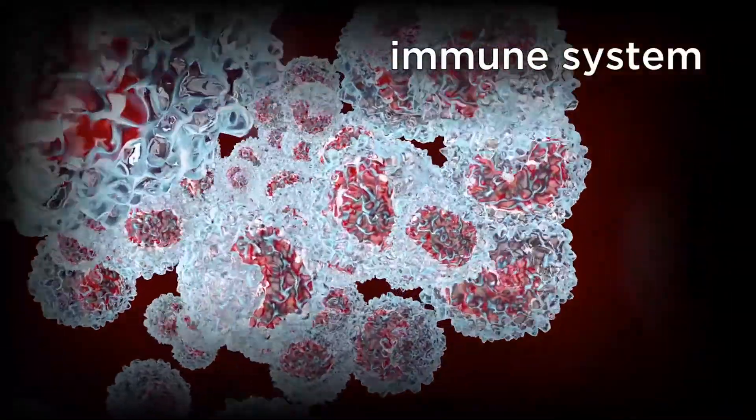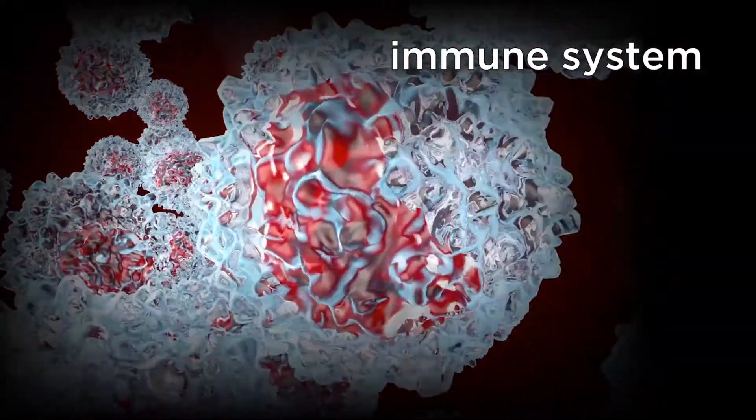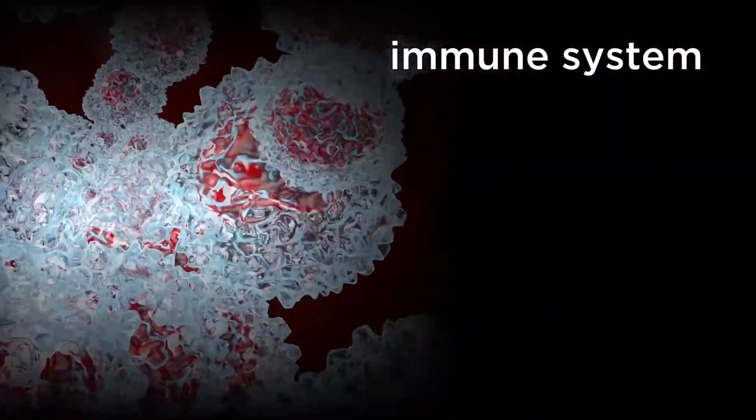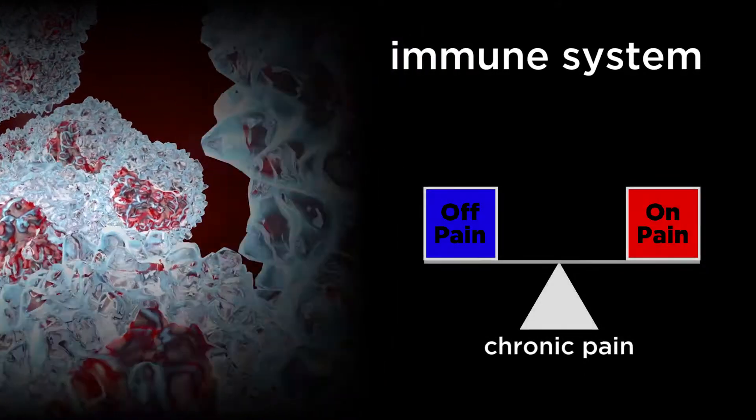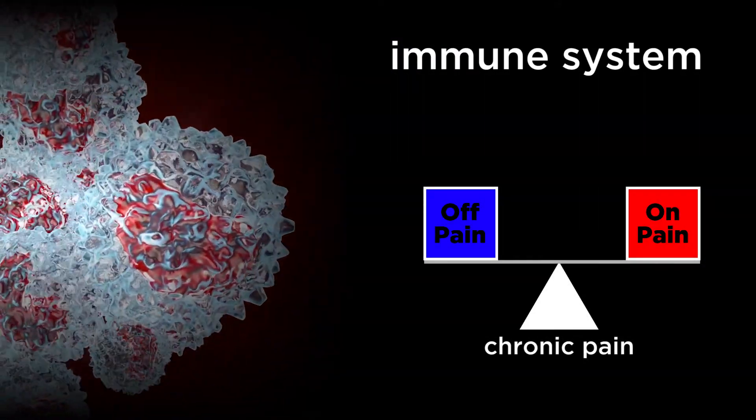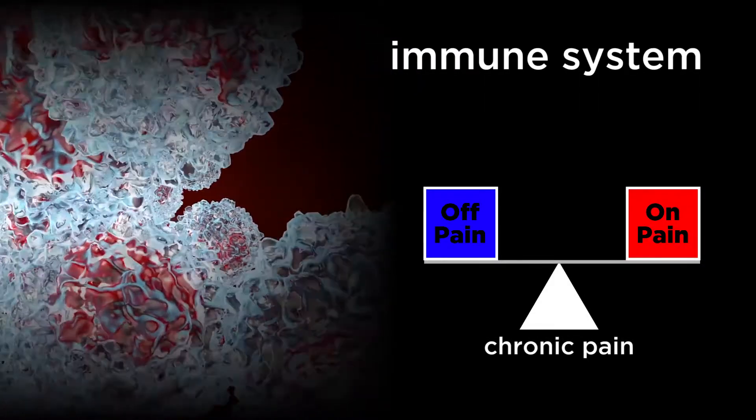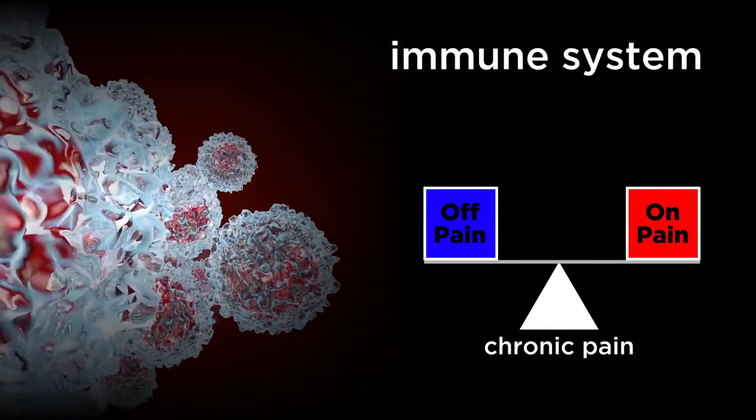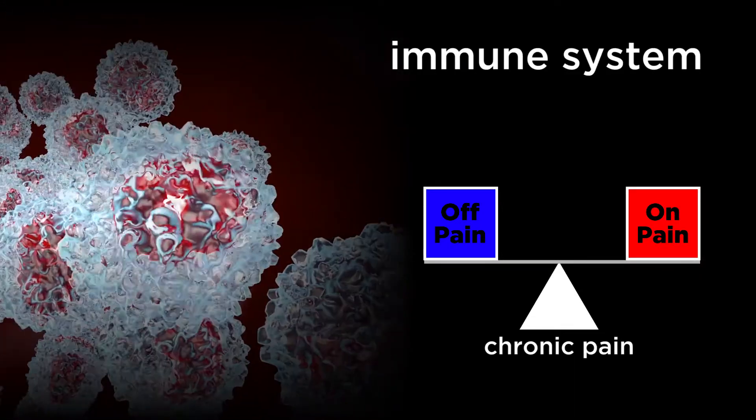The immune system is our body's defense mechanism to injury and infection. Like the brain, there is normally an even balance between chemicals produced by the immune system that turn on pain and those that turn off pain, so you do not feel pain.